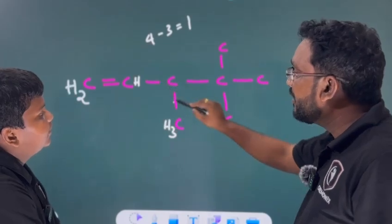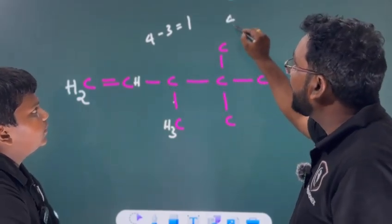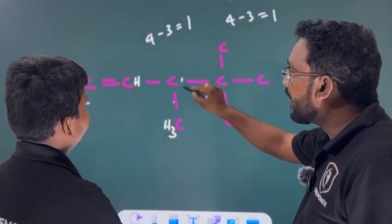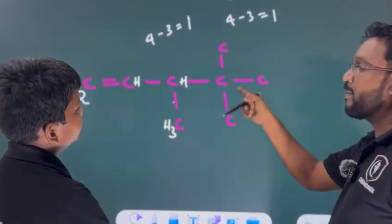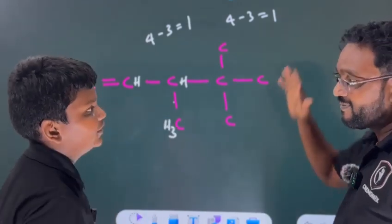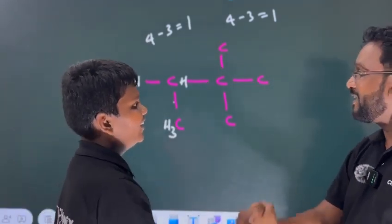At this carbon, how many bonds are already there? 3. 3 bonds. So, 4 minus? 3. Is equal to? 1. So, how many hydrogens should be there? H1. 1 hydrogen. Very good. That is all. Now, tell me at this carbon, how many hydrogens should be there? There should be no hydrogens. Why? Because it has 4. Very good, buddy.